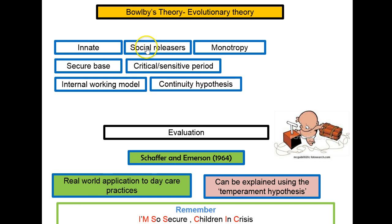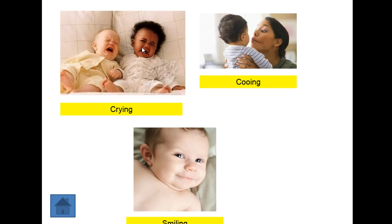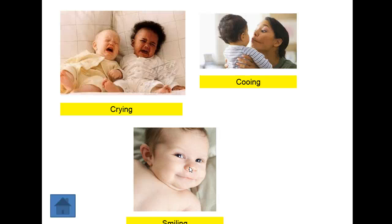We're born with these attributes and particular features — what we call social releases. Babies are born able to cry, coo, and smile. All these things are innate, and they're called social releases because they're social signals that make caregivers want to come and look after us. If we don't cry, how is our caregiver going to know we're hungry? If we don't coo or smile, how is our caregiver going to know we're happy or content? We do these things so the caregiver knows how to look after us.